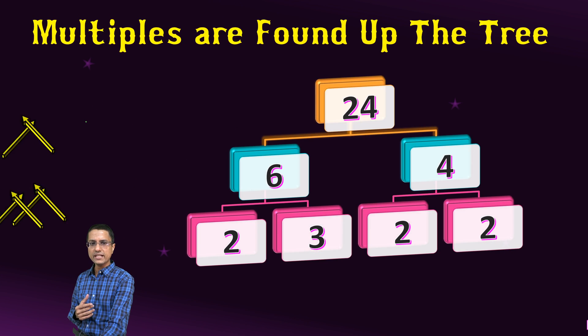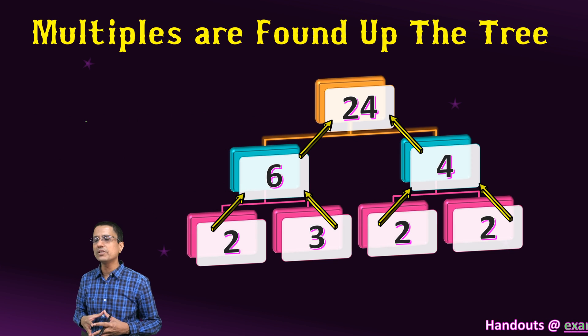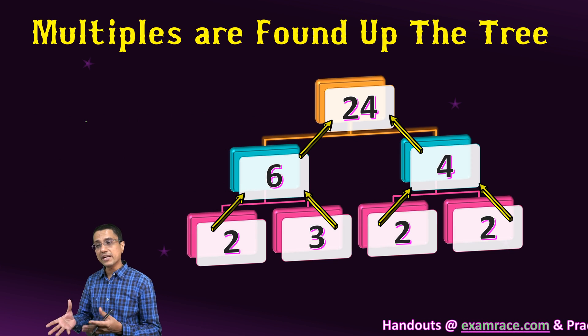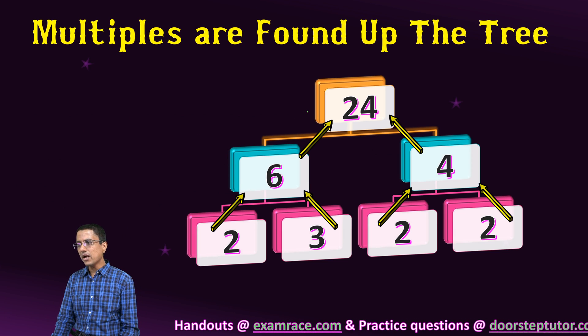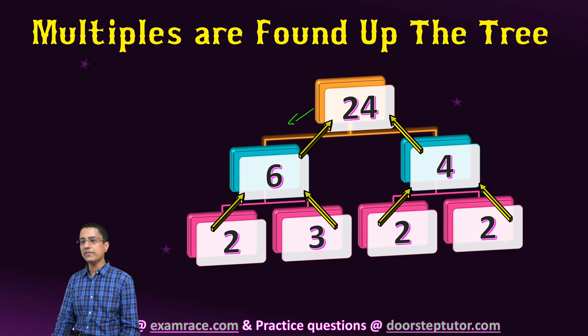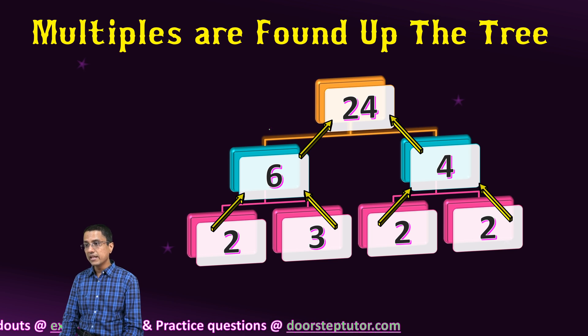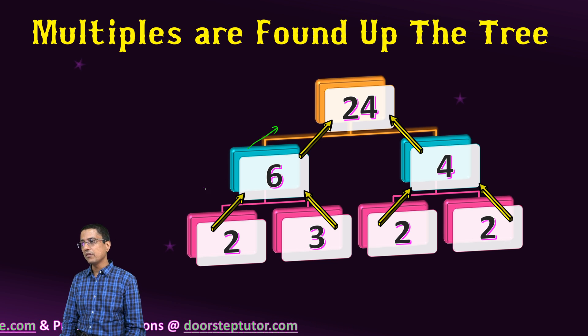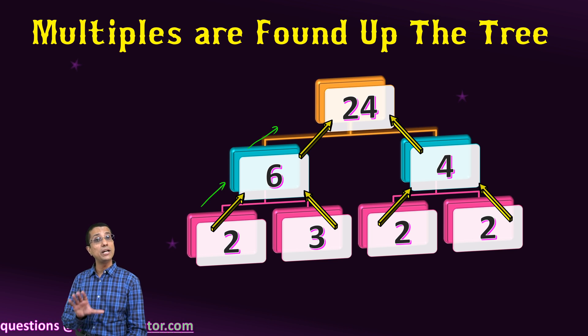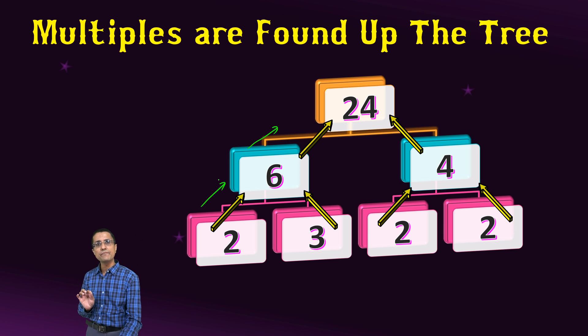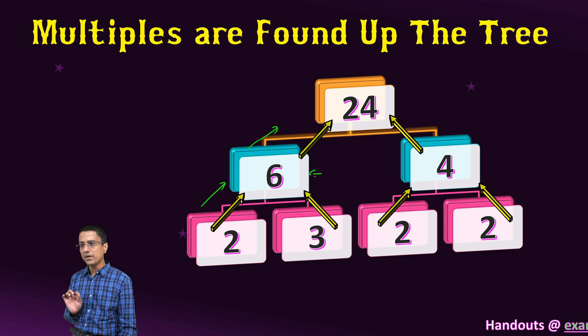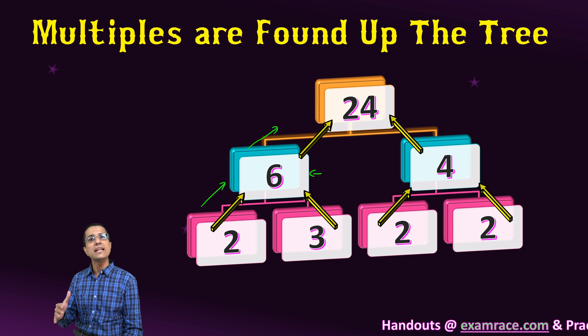Now let us look at some of the properties of these multiples in terms of factor tree. We have already looked at the factor tree. When we go down, we know that we always find the factors of a number. If we go up the tree, we always find the multiples of the number. They are not all the multiples, but definitely if the number is above another number in a factor tree, it is a multiple.